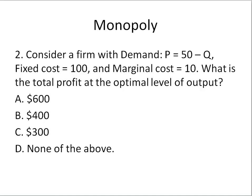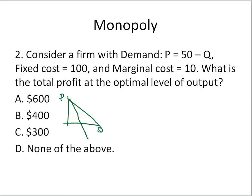Let's work through a numerical example. We have a demand curve — Quantity on the horizontal, Price on the vertical. Demand is 50 minus Q, so it starts at 50. Marginal Revenue is going to start at 50 as well with twice the slope. Marginal Cost is 10. I want to find where Marginal Revenue equals Marginal Cost — that gives me the profit-maximizing quantity and price.